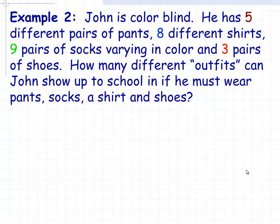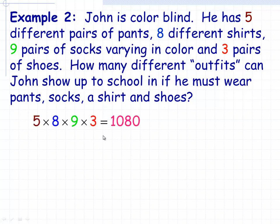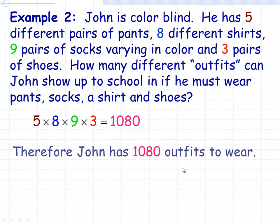In example two, John is color blind — the significance of that is simply that he could literally make his outfits without worrying about matching. We're told he has five different pairs of pants, eight different shirts, nine pairs of socks, and three pairs of shoes. How many different outfits can John show up to school in? Using the fundamental counting principle with four actions: five ways to select his pants, times eight ways to select his shirt, times nine different pairs of socks, times three different pairs of shoes. Five times eight times nine times three equals one thousand eighty. So there are 1,080 possible outfits John could wear.